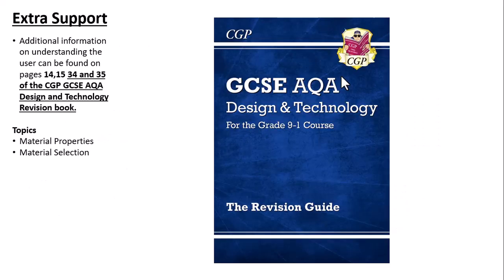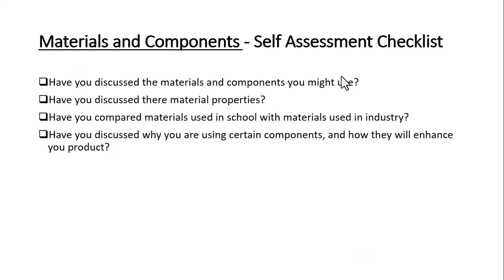In the GCSE books, which you'll have a copy of, there are several pages covering material properties and material selection that you might want to use. Finally, there's a checklist to make sure you cover everything: discuss materials and their properties, compare materials used in school with materials used in industry, and discuss why you're using certain components and how they will enhance your product.